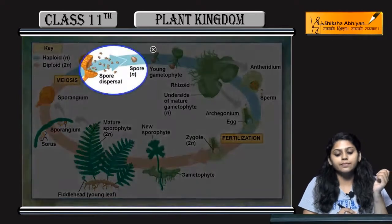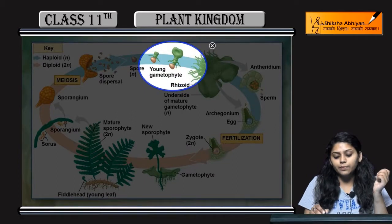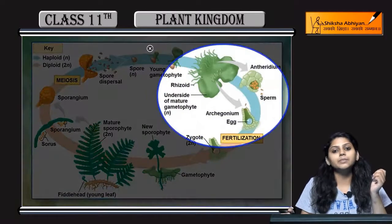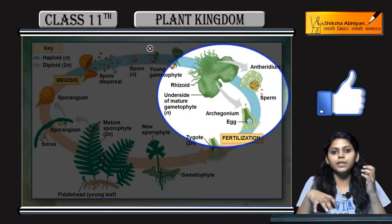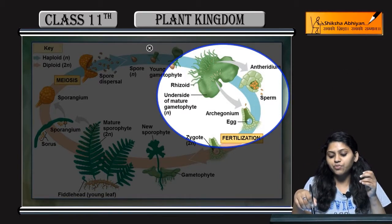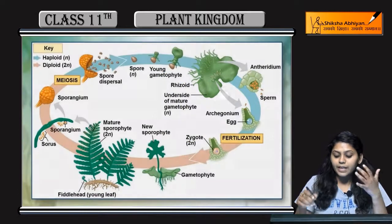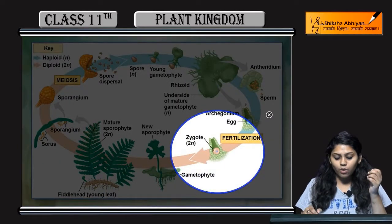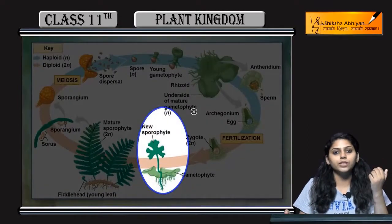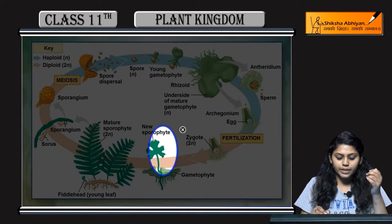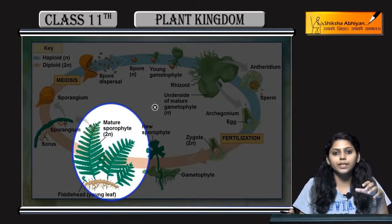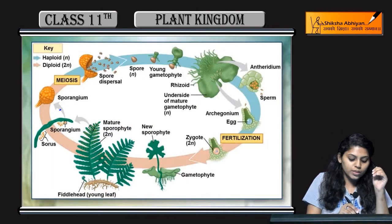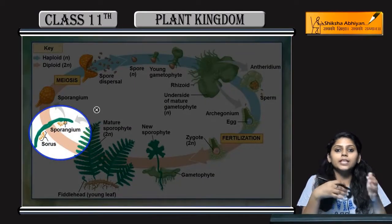Looking at this diagrammatically: spore dispersal occurs, then a young gametophyte forms. Antheridium and archegonium are produced — antheridium produces male gametes and archegonium produces female gametes or eggs. After sperm dispersal, fertilization of egg occurs and zygote formation takes place. After zygote formation, a new sporophytic body forms, which matures into a mature sporophyte. On the lower side of the leaf-like structures, sorus is present. The individual unit of a sorus is called a sporangium.